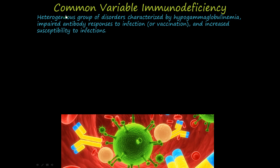In this video, we're going to continue our discussion of the primary immune deficiency syndromes. This one is the common variable immunodeficiency syndrome. It's a heterogeneous group of disorders — heterogeneous means it has several different starting points and different pathogenesis, but the characteristics of the disease all end up being the same. You have hypogammaglobulinemia, so a low gamma globulin count in the blood, an impaired antibody response to infections or to vaccinations, and an increased susceptibility to infections.